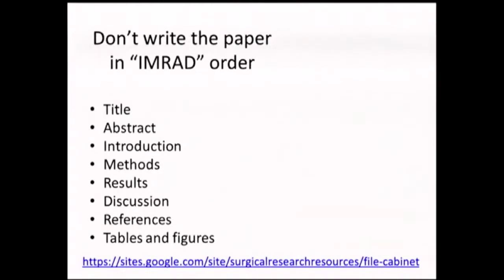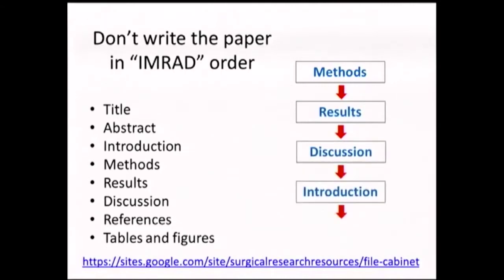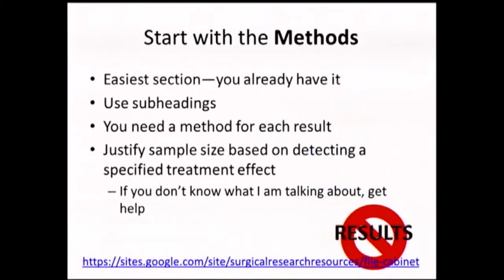When you do write, you don't write the paper in the order that you would read it. Papers follow what's called the IMRAD order — introduction, methods, results, and discussion. The first thing you write is the methods, because the methods are basically already done. You've done the study, you've done your tables, so it's very easy to translate that into words. Next is results, then discussion, then introduction, and finally when everything is done, you do the abstract. You start with the methods — it's the easiest; it basically already exists.